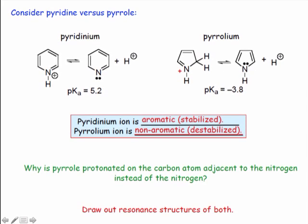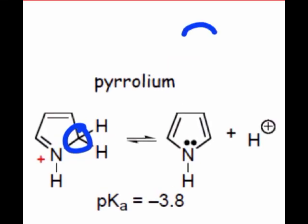Interestingly, pyrrole is not protonated on its N3 nitrogen atom, but on a carbon adjacent to the N3 nitrogen. Why is this the case? Draw out resonance structures of both possible conjugate acids to see why carbon is protonated in preference to nitrogen.